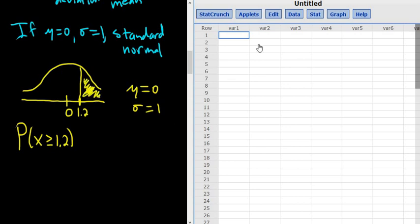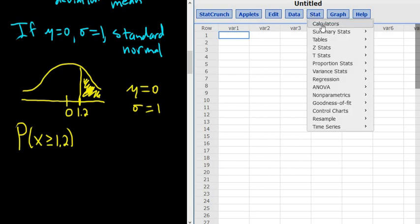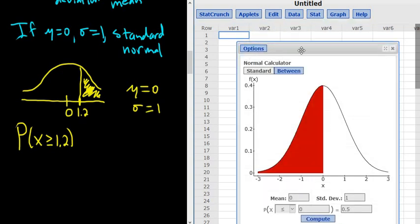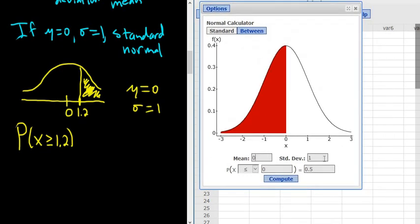So to get the answer you go to StatCrunch and you go to Stat, Calculators, and then Normal. Then you left click. And then you enter the mean. So the mean in this case is 0. Standard deviation is 1. It's the default. And you get this beautiful normal curve.